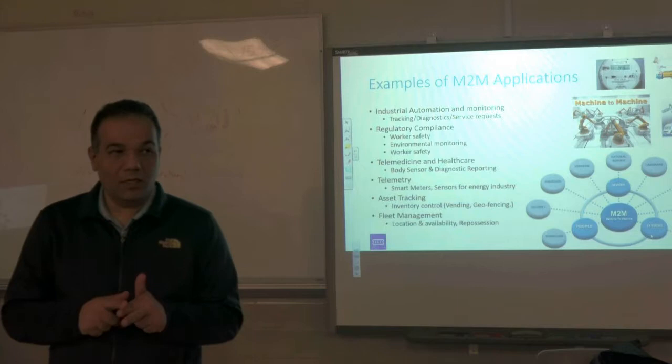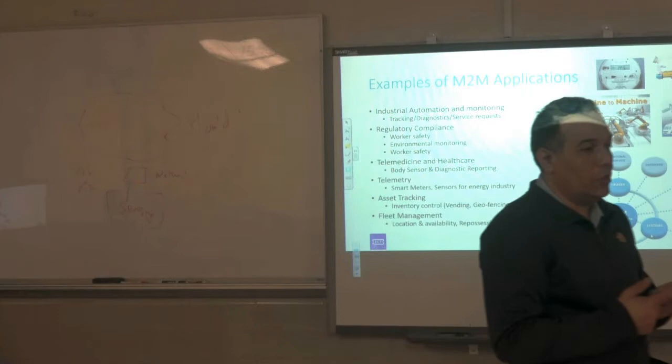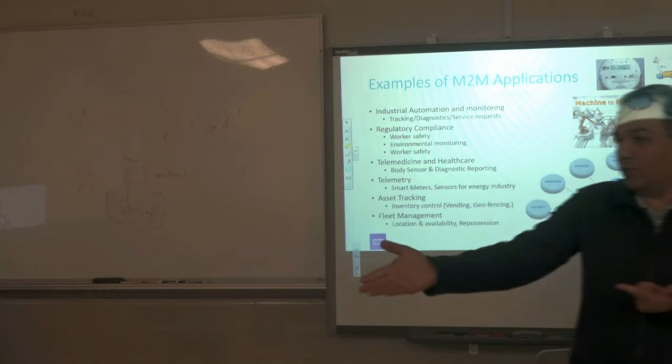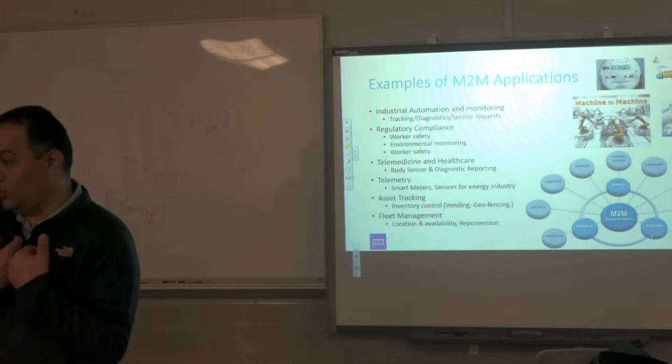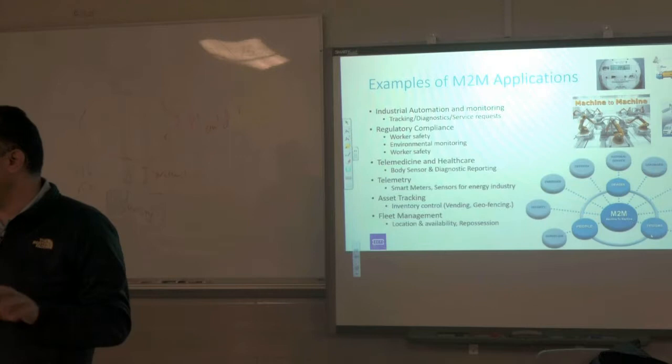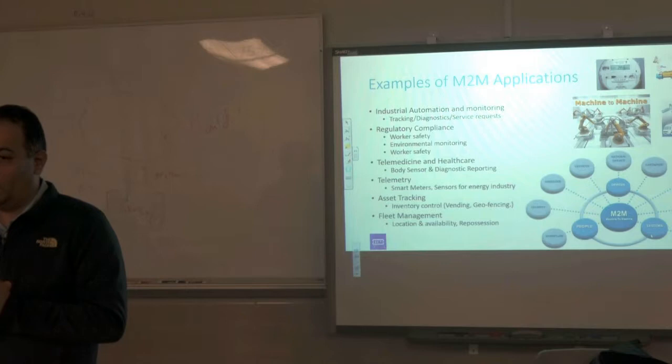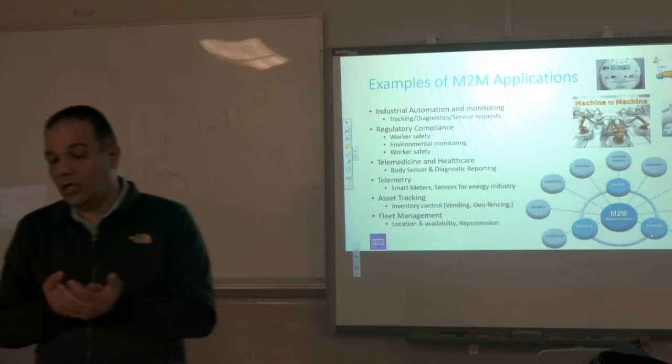We're talking about two different problems: privacy and security. There's my problem, government regulations, constitutional issues. As a technologist, I make the technology available — whether it's regulated by Congress, HIPAA, or other organizations is a separate matter. Privacy is something you can opt out of; security means the data must be secure at all times. It's not mandatory to give up privacy, but sometimes you may choose to.